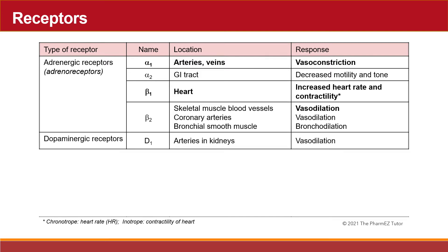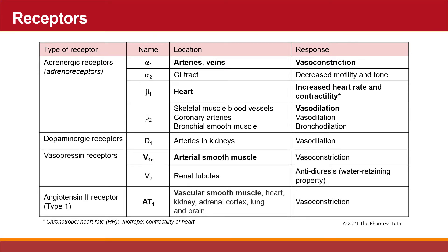Another type of receptors are the dopaminergic receptors, or D1, located in arteries in the kidneys. When activated, vasodilation in the kidney occurs, including increased renal blood flow. Two other types are the vasopressin receptors: V1A, located in the arterial smooth muscle, causes vasoconstriction when activated; and V2 receptors, located in the renal tubules, produce an antidiuretic effect. Another important receptor is the angiotensin-2 receptor type 1, located in the heart and vascular smooth muscle — when activated in the vasculature, vasoconstriction occurs.